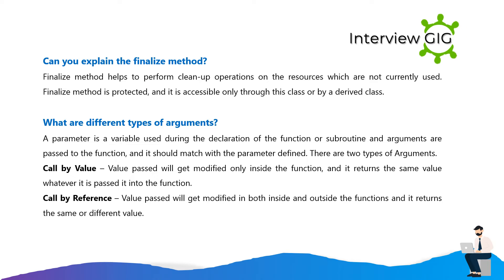Can you explain the finalize method? Finalize method helps to perform cleanup operations on resources which are not currently used. Finalize method is protected and it is accessible only through this class or by a derived class. What are the different types of arguments? A parameter is a variable used during the declaration of the function or subroutine, and arguments are passed to the function and should match with the parameter defined. There are two types: call by value — value passed will get modified only inside the function and returns the same value passed into the function; and call by reference — value passed will get modified both inside and outside the functions and it returns the same or different value.